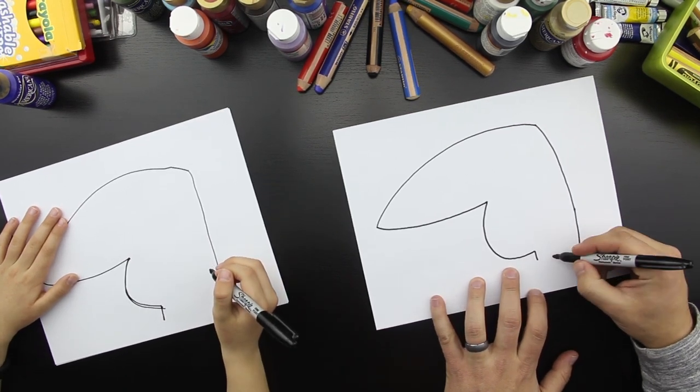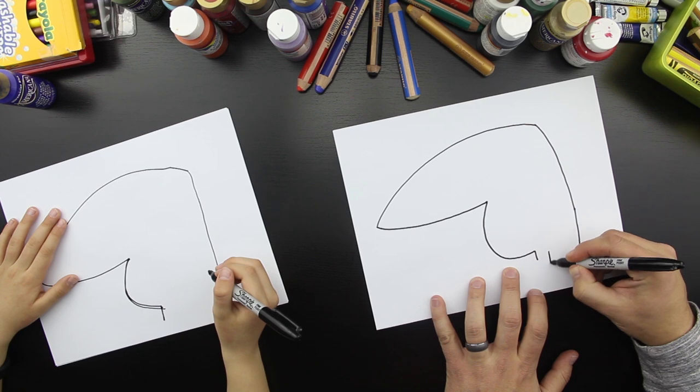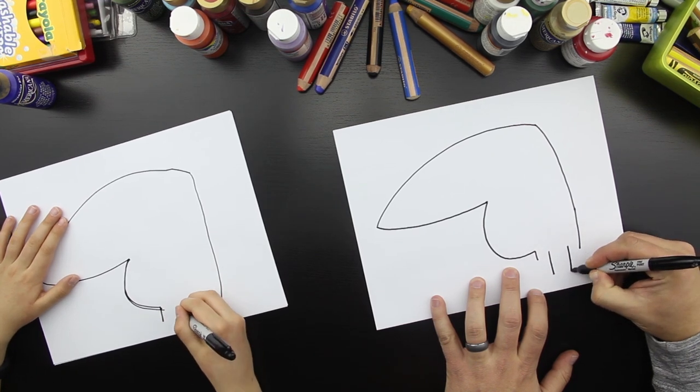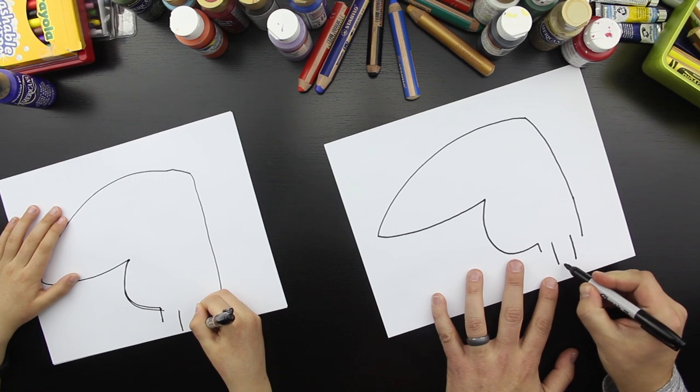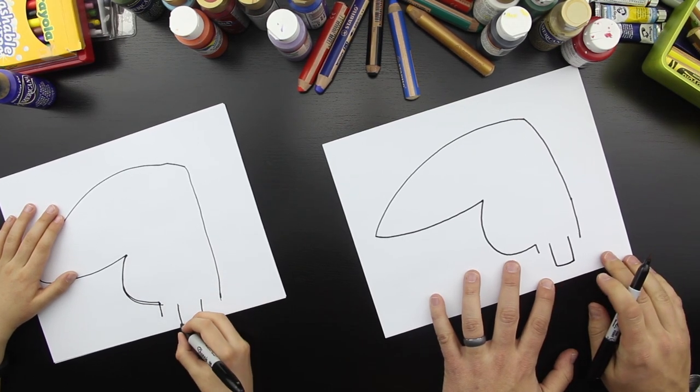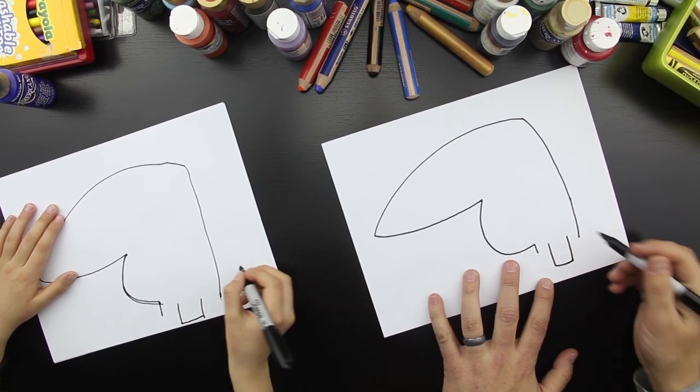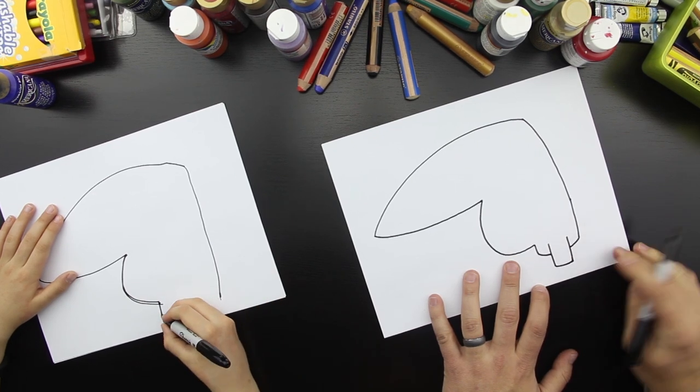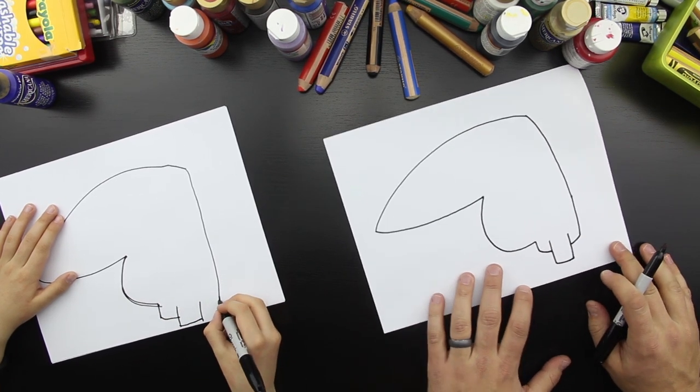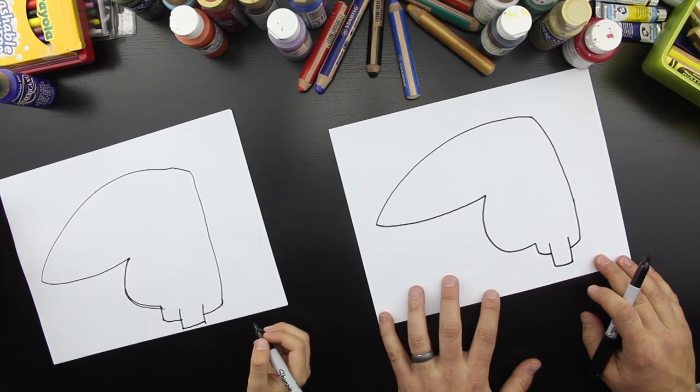Then we're going to draw two lines in the middle. Excuse me, my marker squeaked. And then we're going to draw an end on it so it looks like a square U. My marker squeaked again. That's his tail. That's going to be the toucan's tail.